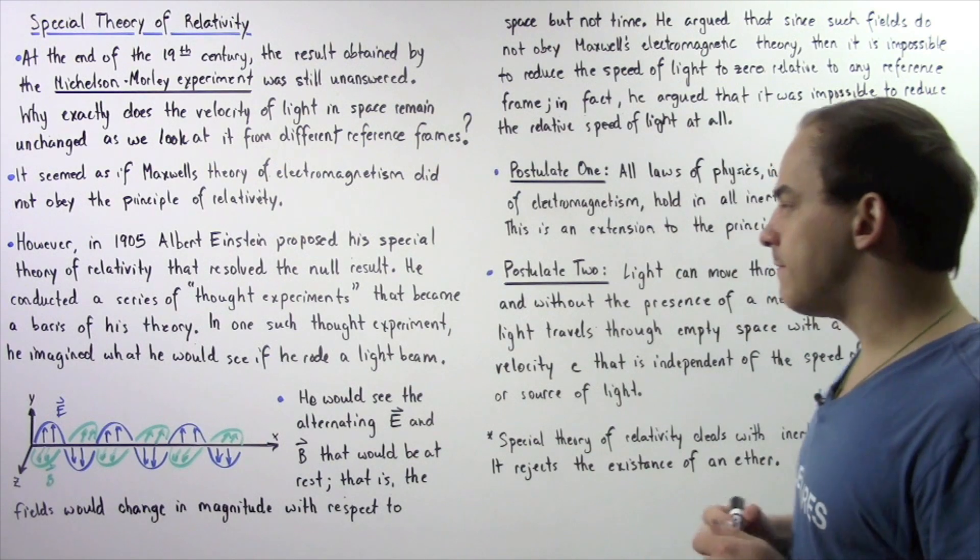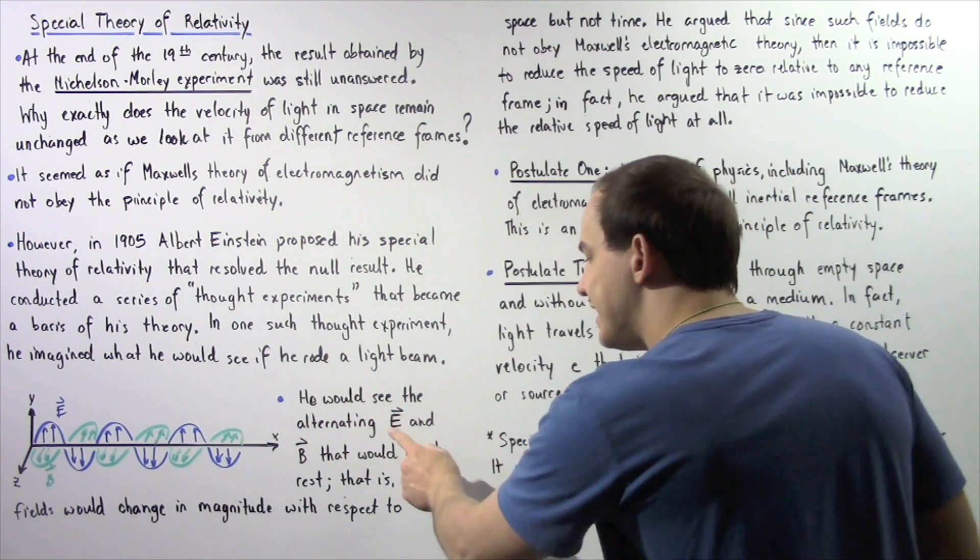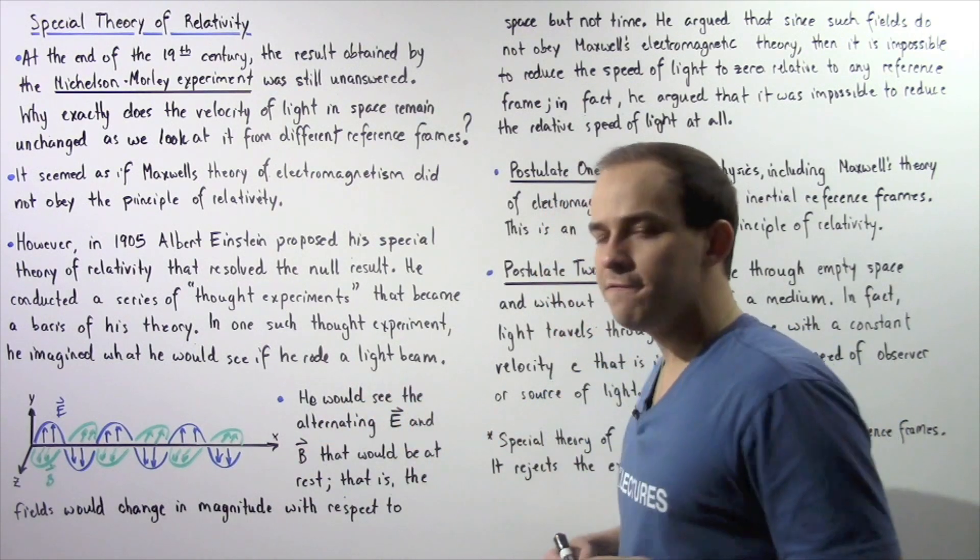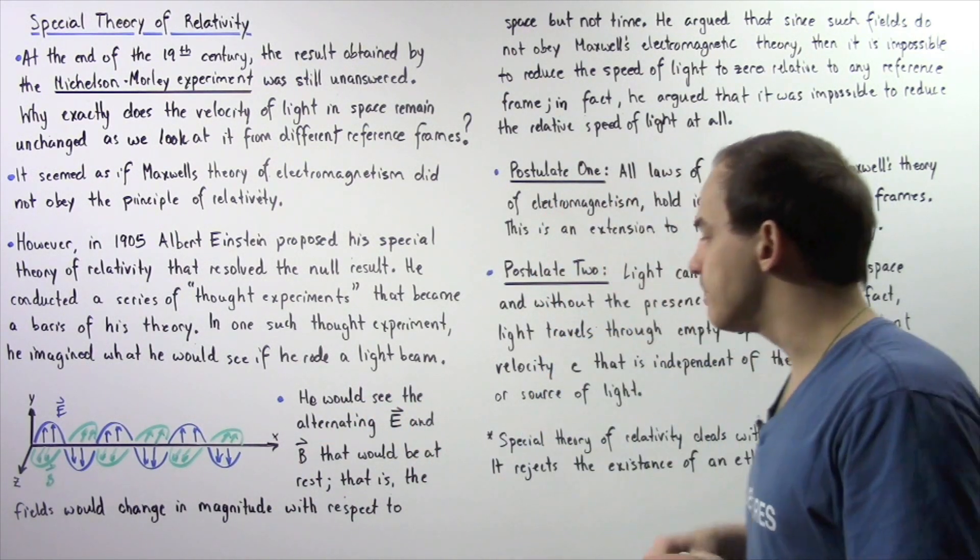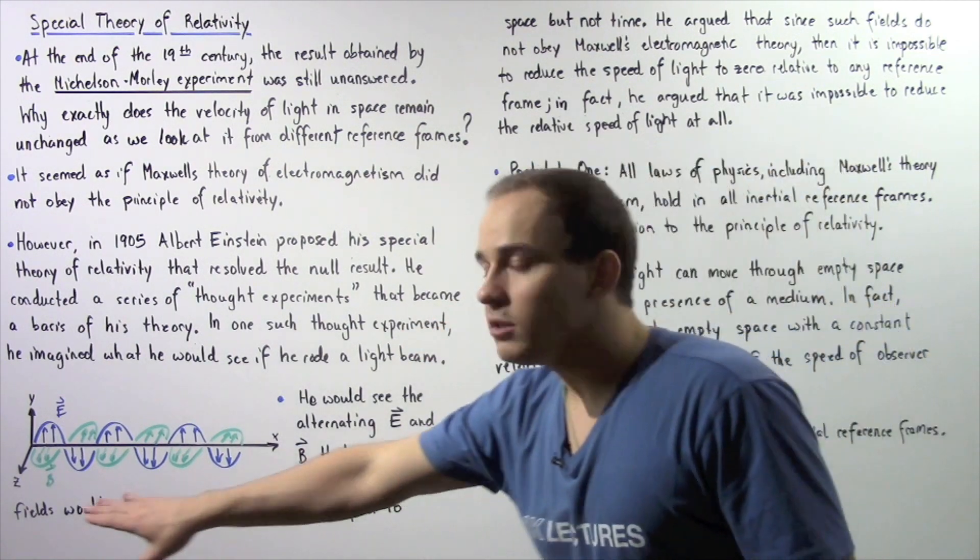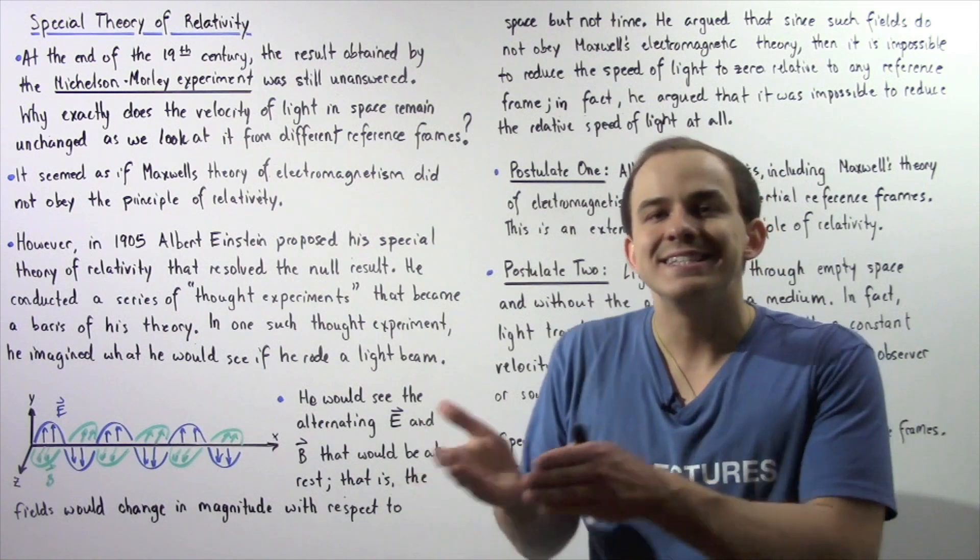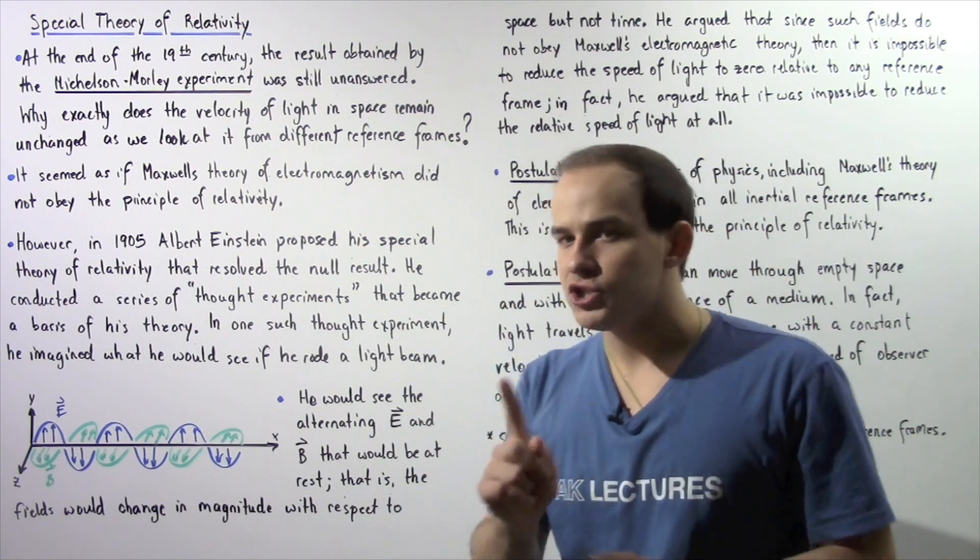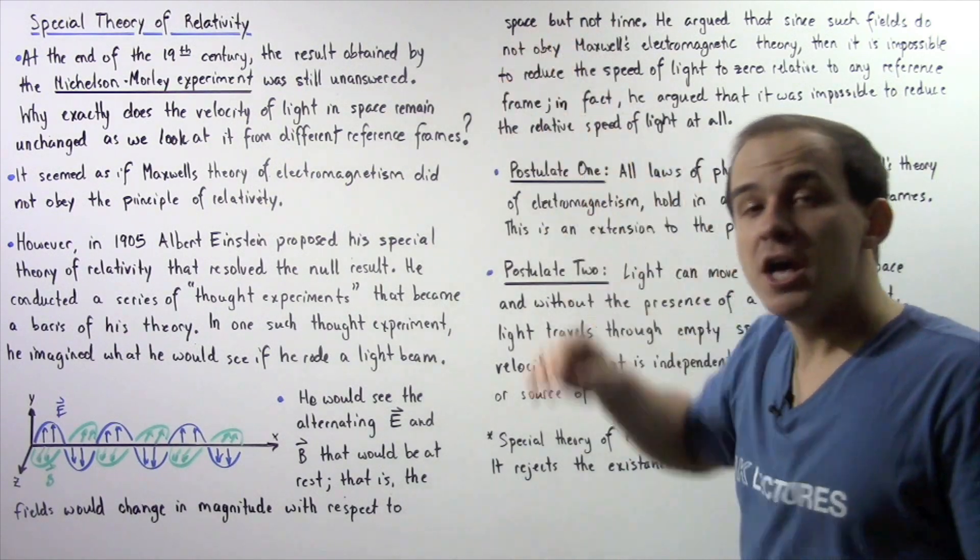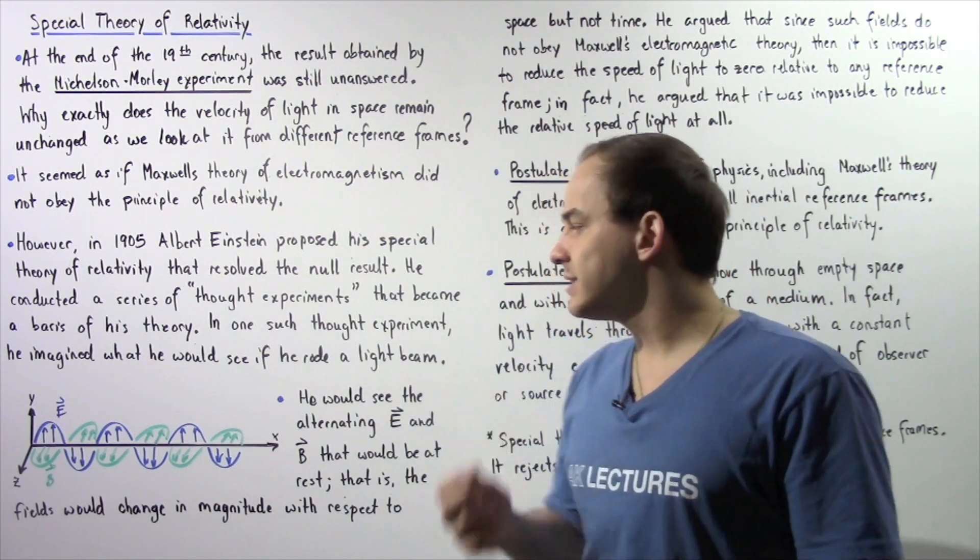What he said is the following: He said that he would see alternating electric and magnetic fields that would be at rest with respect to time. That is, the electric and magnetic fields would actually increase and decrease in magnitude with respect to position, with respect to space. But they would remain unchanged with respect to time.